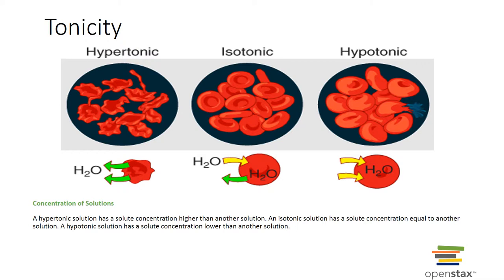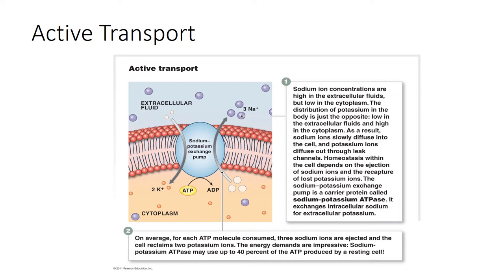This shrinking is called crenation. In a hypotonic solution — again, the bathing solution — the solution has less solute concentration than the cytosol, meaning higher water and lower solute concentration, and water moves into the cell, causing it to swell and burst. This is known as hemolysis. To summarize, the passive processes we have discussed are simple diffusion, facilitated diffusion, and osmosis.